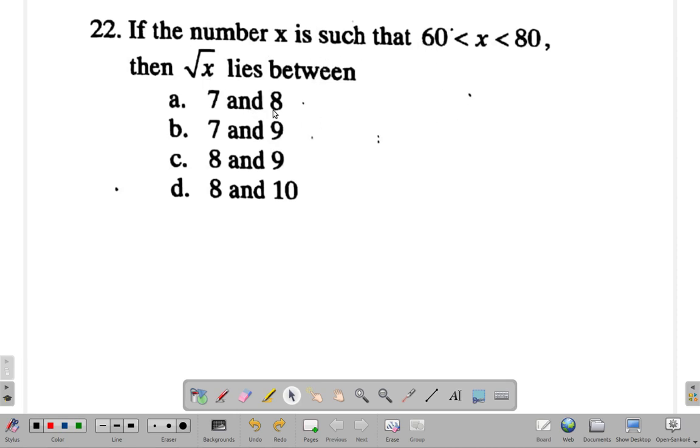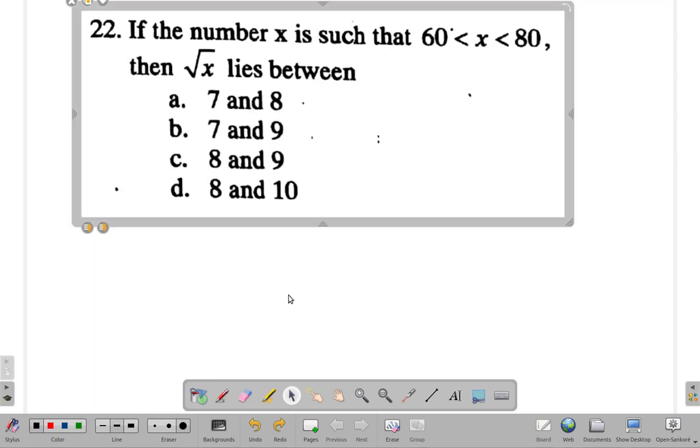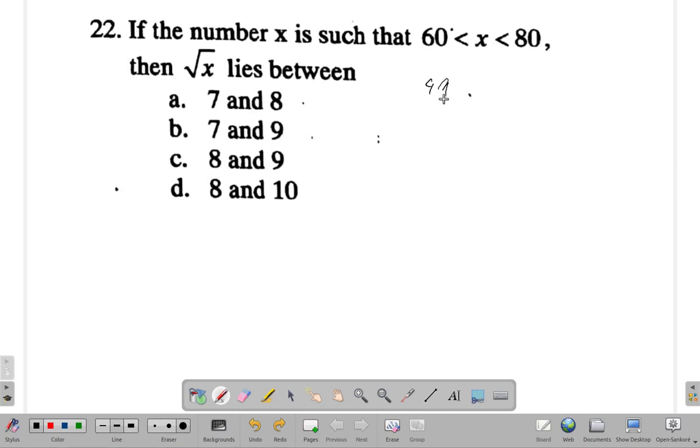Alright, it's 7 and 8. No, that's 7, 7 is 49. 7, 7 is 49. 8, 8 is 64.